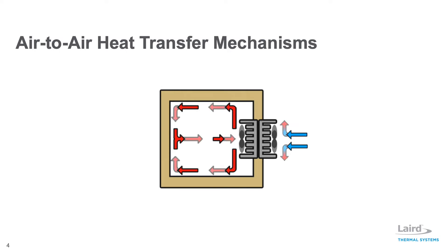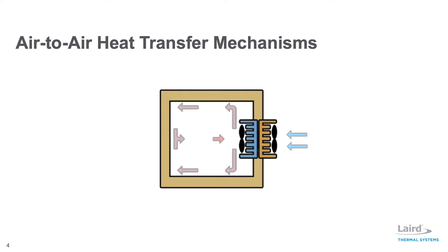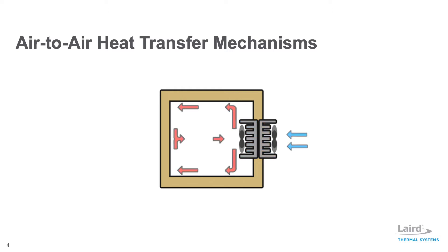Air-to-air assemblies offer dependable compact performance by cooling objects via convection. Heat inside the chamber is absorbed by the cold side heat exchanger. The thermoelectric coolers pump heat from the cold side heat exchanger and dissipate it through the hot side heat exchanger to the outside environment. The internal air circulation from the cold side fan helps minimize temperature gradient within the enclosure. This configuration is commonly used in sample storage chambers for medical and analytical instrumentation, electronic enclosures, and compartment storage for food and beverage applications.